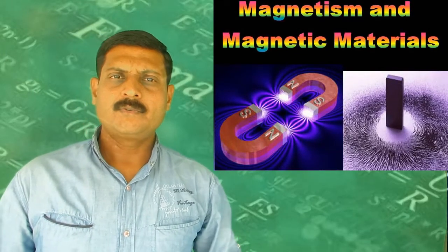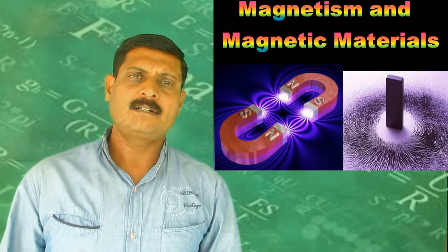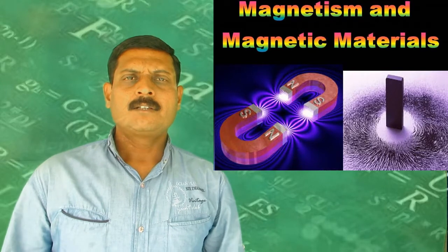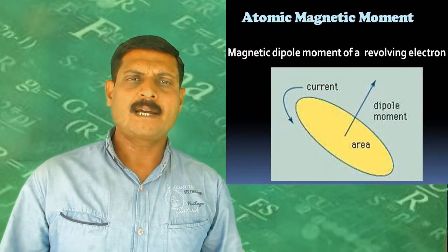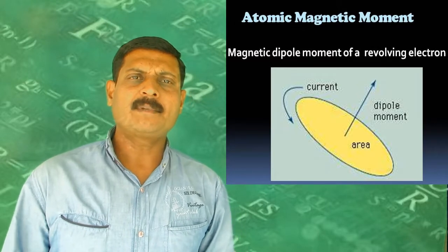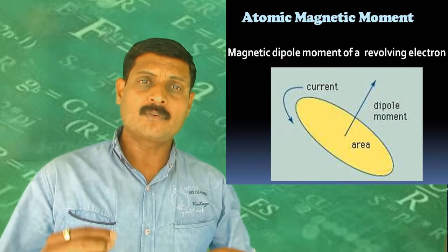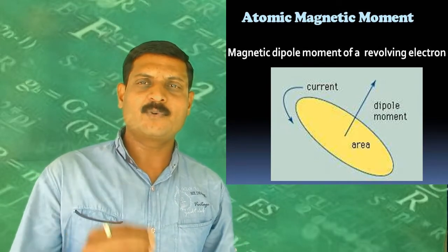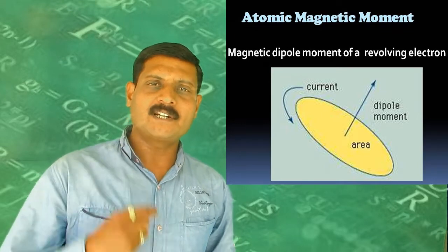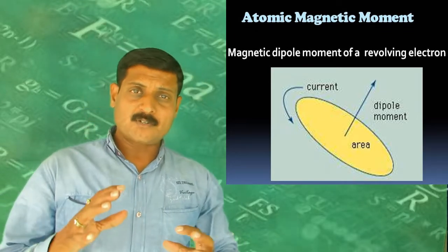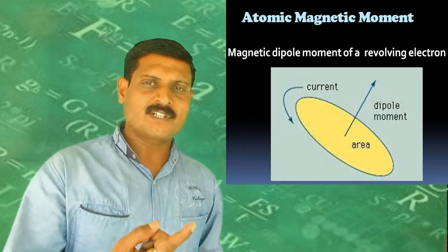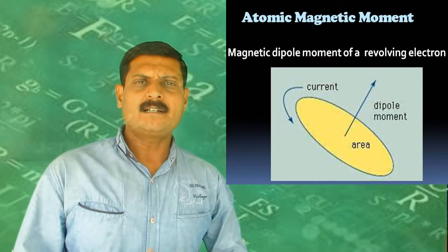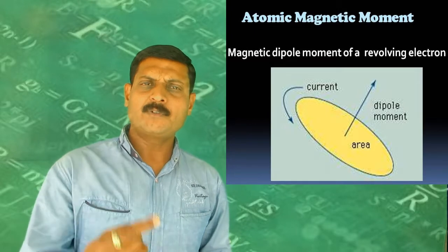Today we will discuss magnetism and magnetic materials. First, we look at the atomic magnetic dipole. An atom consists of a central core, the nucleus, and electrons revolving around the nucleus in a stable circular orbit. The electron possesses two types of motion: orbital motion and spin motion.